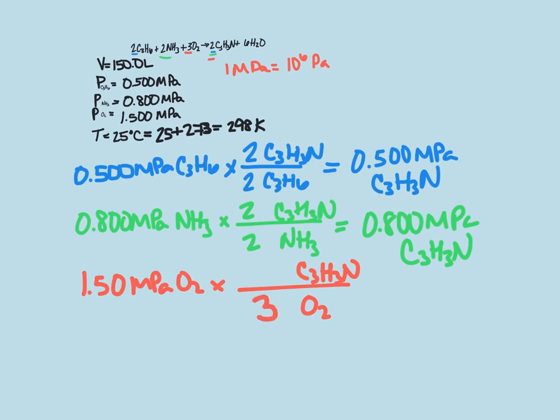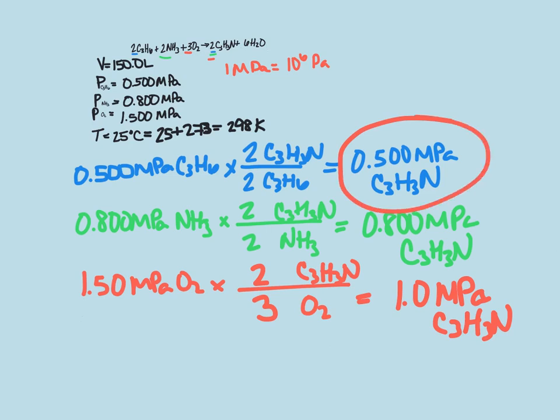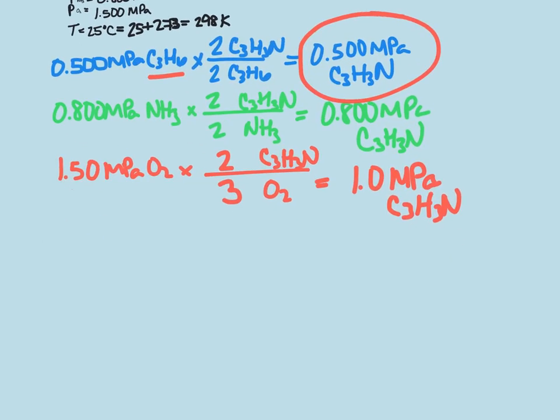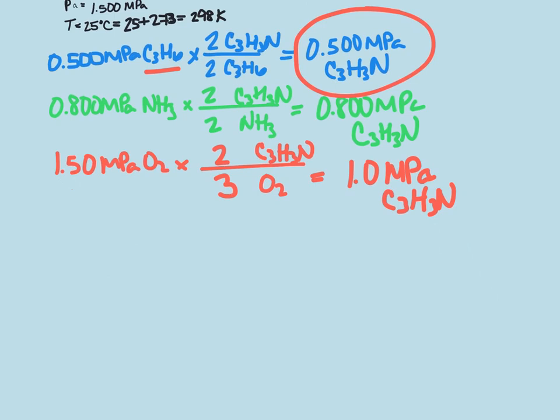So I'm going to put 3 here, 2 here, which gives us 1.0 megapascals of C3H3N. Out of these three, this here is going to be the limiting factor. Our C3H6 is going to be our limiting factor. Now we can take that value.